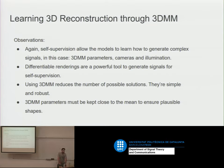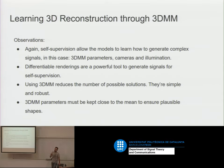Some observations from this work: self-supervision is very helpful if you don't want to annotate a lot of data or acquire it. Using 3D morphable models is a very good option when working in industry, because you more or less ensure that you will provide robust results — you're not going to get very weird shapes as you might with other representations. Because you regularize just this vector and teach the network not to produce very long vectors, they more or less behave well. We are using that in our company and it works very well.